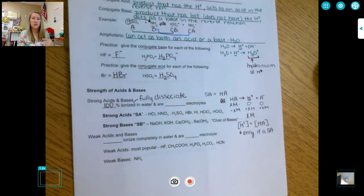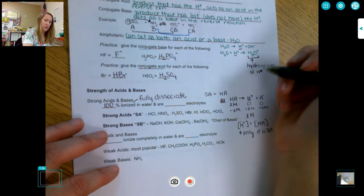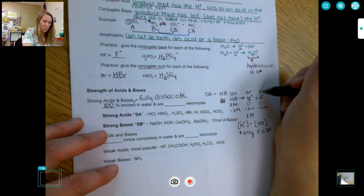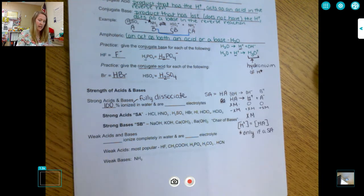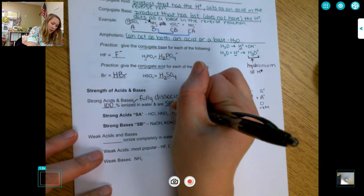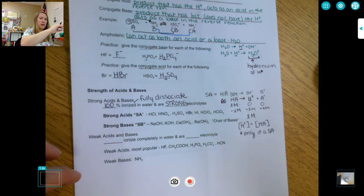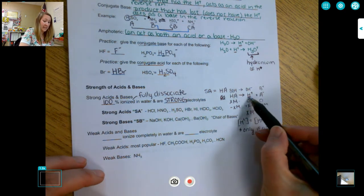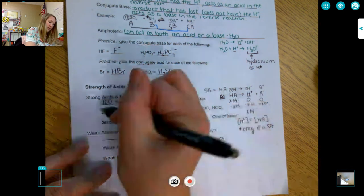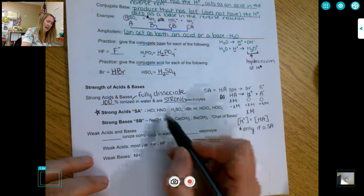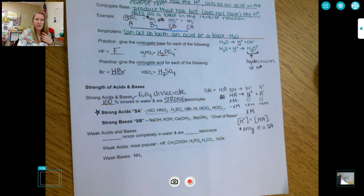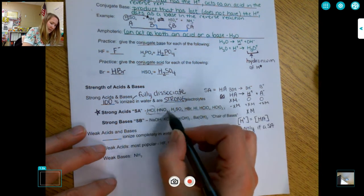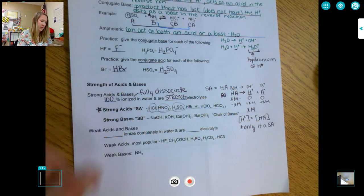And same thing for a base. Strong base, you'd write it as BOH. Same thing. Hydroxide ions with B, which is your cation, 100% ionizes, makes them a strong electrolyte. Electrolytes are things that you have in Gatorade and Propel. They are ions in solution. So we're making tons of ions in solution. You want to know your strong acids and your strong bases. Strong acids especially will come up on the AP exam and you'll want to identify them. Most times you're going to see hydrochloric acid, nitric and sulfuric, but the other ones could come up too. And then these are your strong bases.